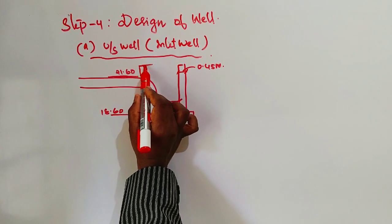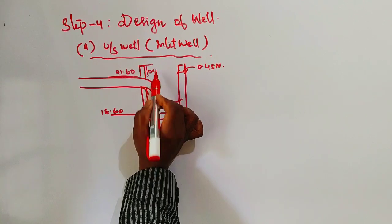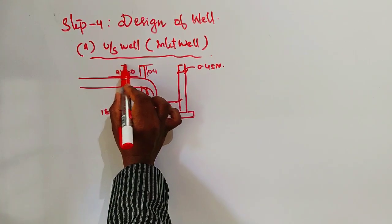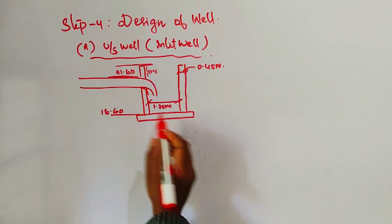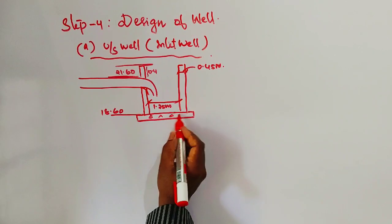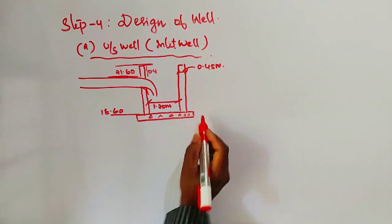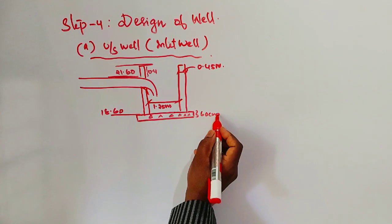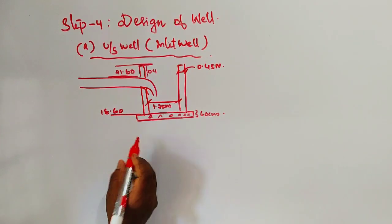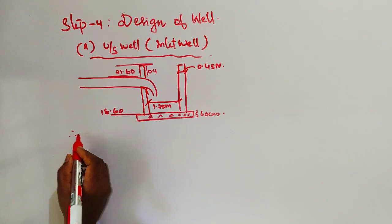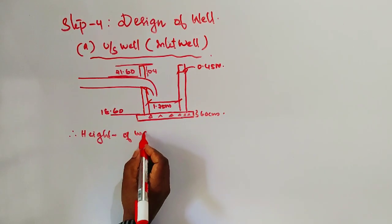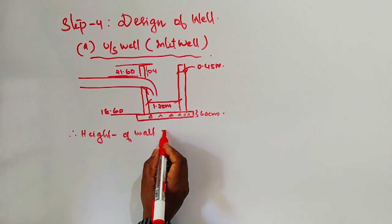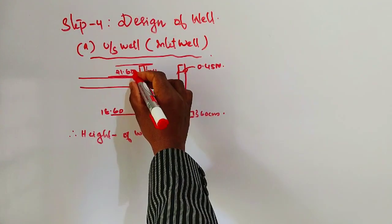You can provide 40 centimeters, that is 0.4, for the top level. Then comes the foundation. Concrete foundation is 60 centimeters thick, so provide thickness of the foundation as 60 centimeters. We need height of the wall. Height of the wall equals top level minus bottom level. Top level is 21.6 plus 0.4.